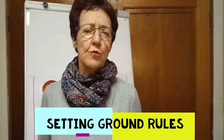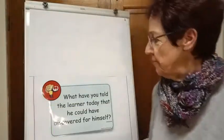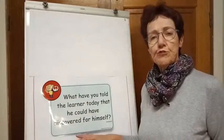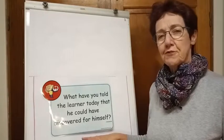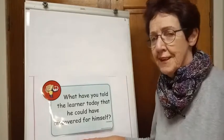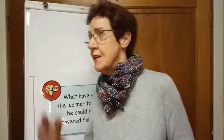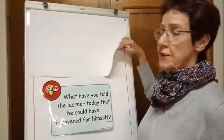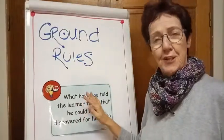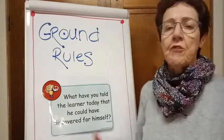So a good question: why do we set ground rules? I love this quotation — what if you told your learners today that they could have discovered for themselves? Very important, especially as adults, that we identify information all by ourselves, because then we remember it. So we need to be sure that we set ground rules to help our learners discover for themselves.